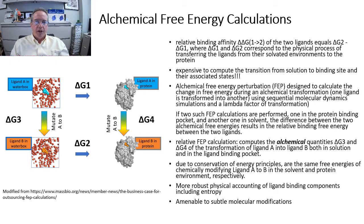the difference between the two free energies is equivalent to the relative binding free energy between the two ligands. This figure shows this concept by depicting two ligands, ligand A and ligand B, in the complex and free-solvated states. The relative binding affinity of the two ligands equals ΔG2 minus ΔG1, where ΔG1 and ΔG2 correspond to the physical processes of transferring the ligands from their solvated environments into the protein.